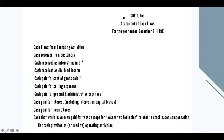In preparing your statement of cash flows, the heading should be: first line, the name of the company; second line, the name of the financial statement such as 'Statement of Cash Flows'; and for the year ended December 31 and then the year — just like how you report your income statement. For cash flows from operating activities, this would include cash received from customers, cash received as interest income, cash received as dividend income, cash paid for cost of goods sold, cash paid for selling expenses, cash paid for general and administrative expenses, cash paid for interest including interest on capital leases, cash paid for income taxes, and cash paid for taxes related to stock-based compensation. We will tally all the amounts to get the net cash provided by operating activities.